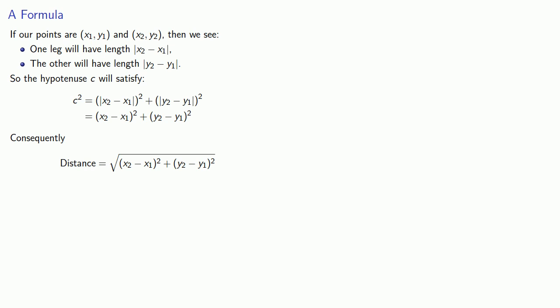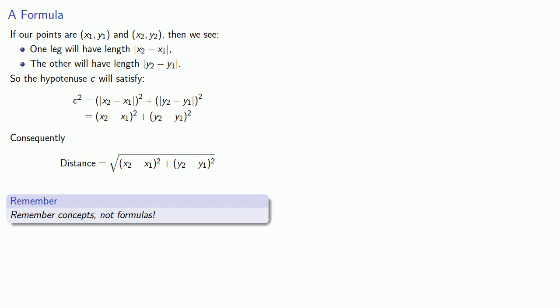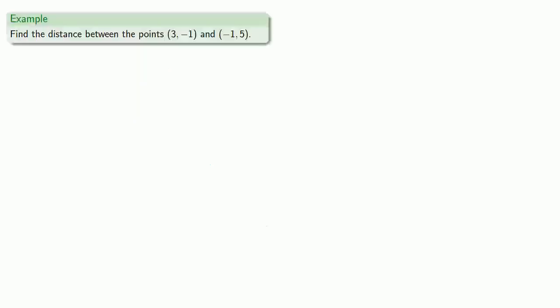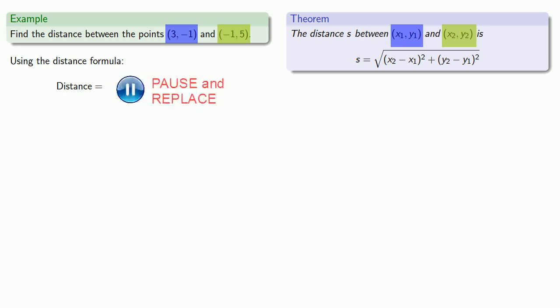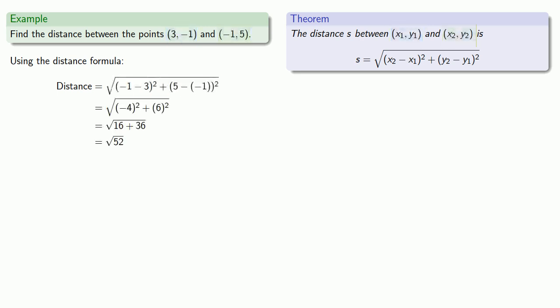An important reminder: remember concepts, not formulas. While it's useful to know the distance formula, it's important to keep in mind that it's just based on the Pythagorean theorem, and it's more important to understand the idea of looking for the right triangle. We already solved this problem without using a formula. Using the formula, with (x₁, y₁) as the coordinates of one point and (x₂, y₂) as the other, we substitute those in and again get the square root of 52.